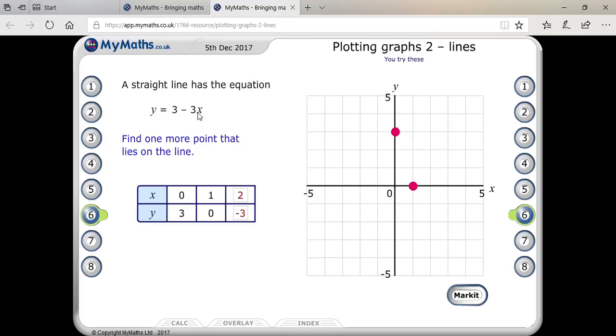Yeah, 3 times 2 is 6, minus 6 is minus 3, yes. 2 comma minus 3. 2 is here, minus 3 will be here. Yes, if you mark it, that's great.